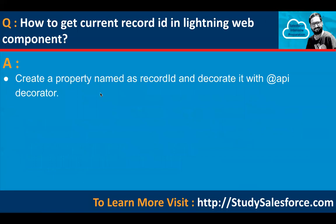How to get the current record ID in a Lightning Web Component: create a property named recordId and decorate it with the @api decorator. This makes the property public, and public properties can interact outside the Lightning Web Component.